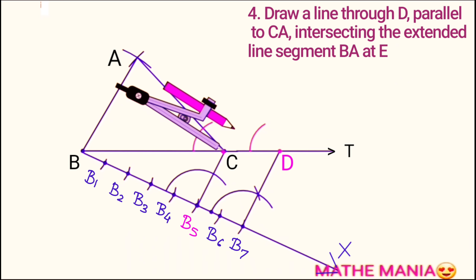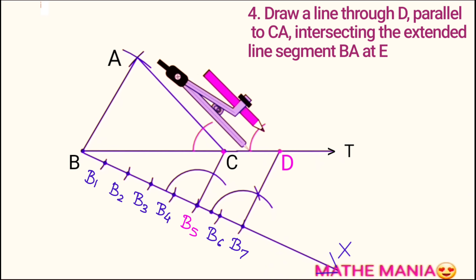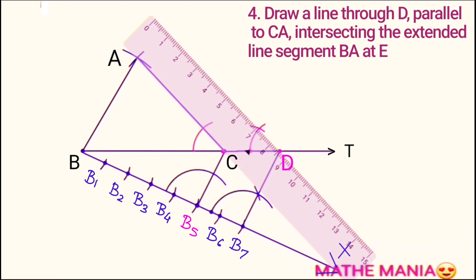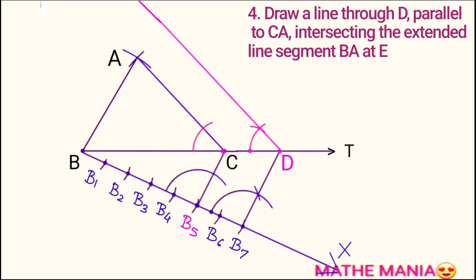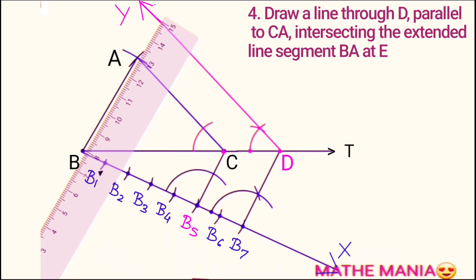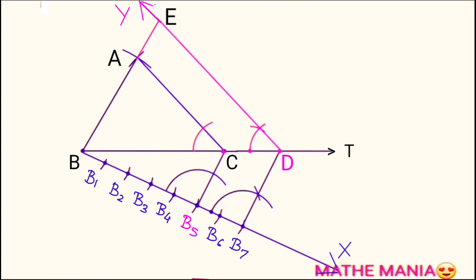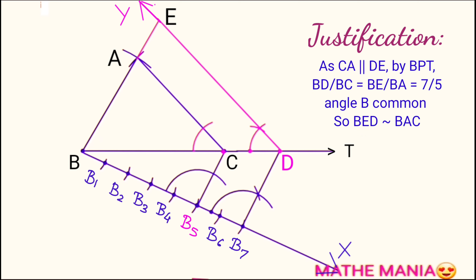The rest of the steps are just like question number two. We get point D on the extended part of line segment BC — BD forms the base of the new triangle. Through D we draw a line parallel to CA. Since it won't meet BA inside the triangle, we extend BA so that the two rays meet at a point. This gives us ray DY, and by producing BA further we get point E where the two rays intersect, completing triangle BDE, which is the required triangle. The justification for this part is the same as for question number two.